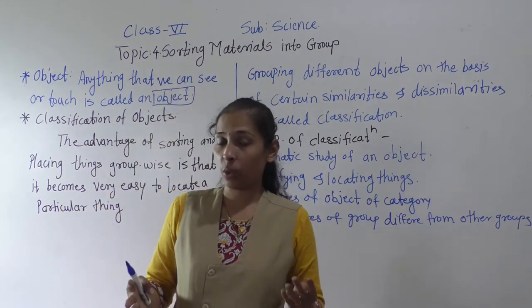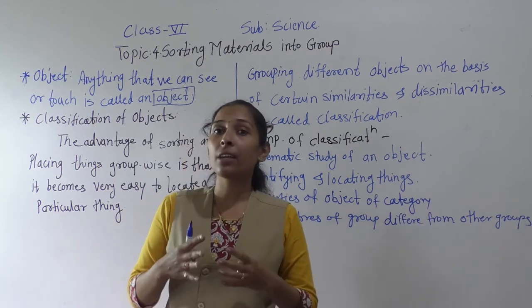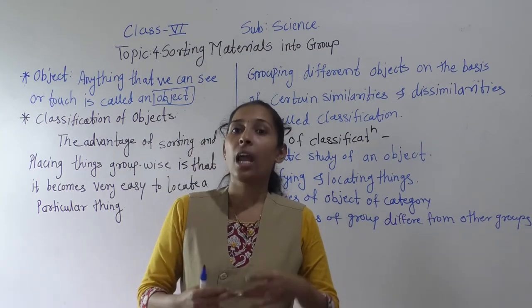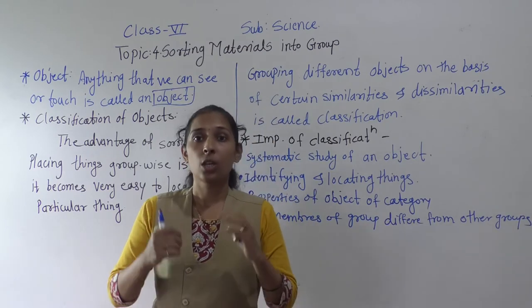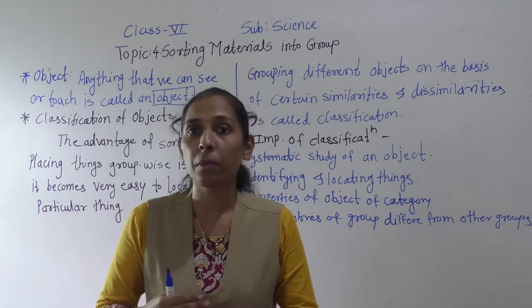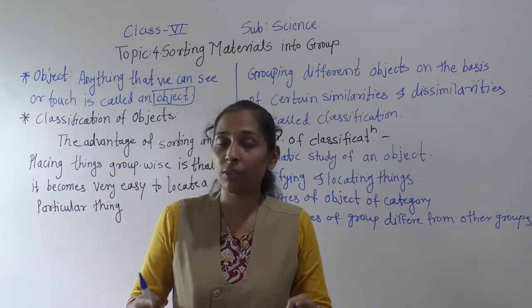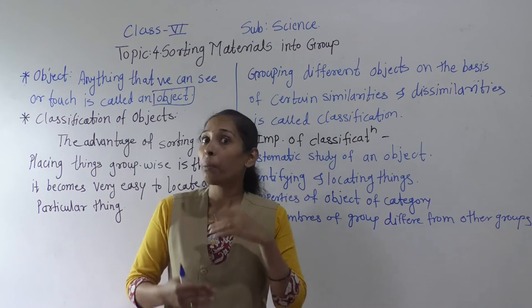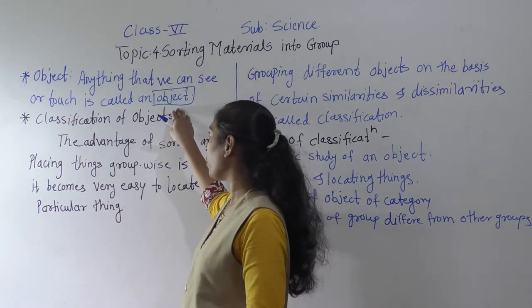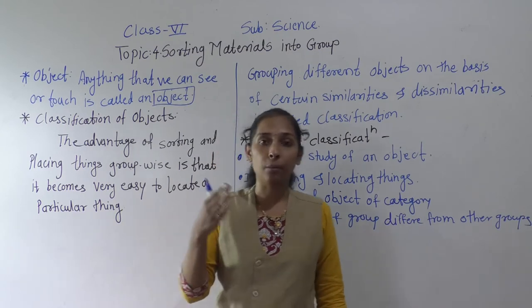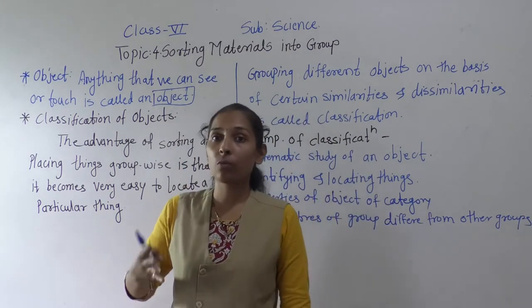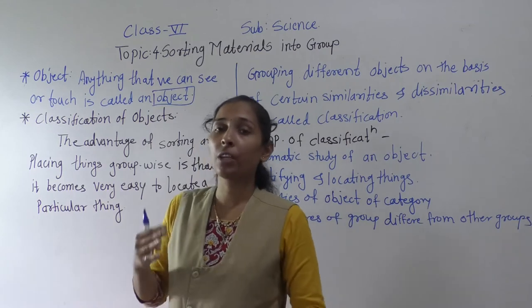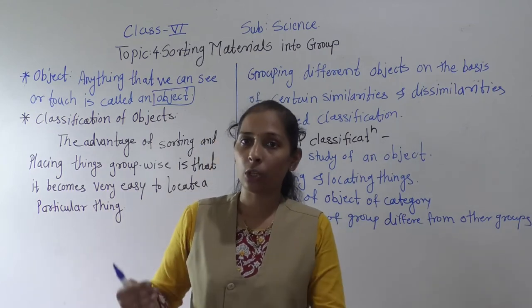Different objects are different from each other. They have different shapes, sizes, colors, and also different properties. So each and every object differs from others with respect to these aspects. Also, these objects are made from one or more materials — they can be made up of one or two types of materials.